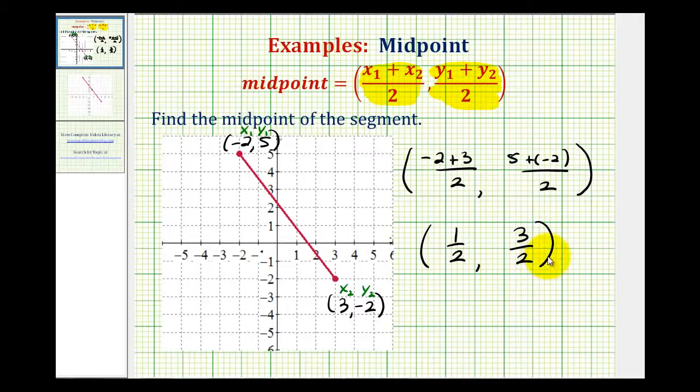Of course, it might be helpful to write these as decimals if we were going to plot the point by hand. And since one half is equal to zero point five and three halves is equal to one point five, we could also express the midpoint in decimal form.